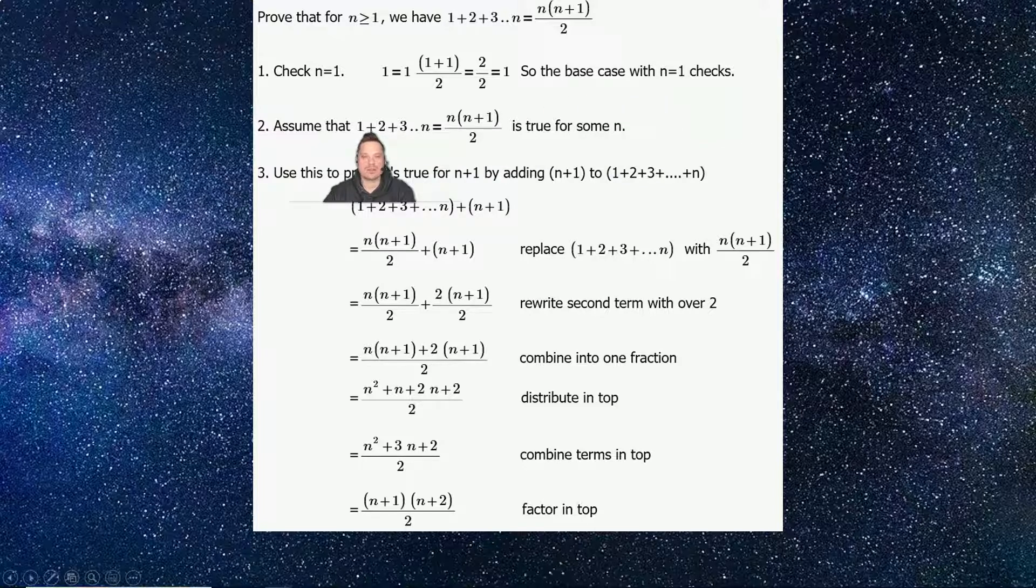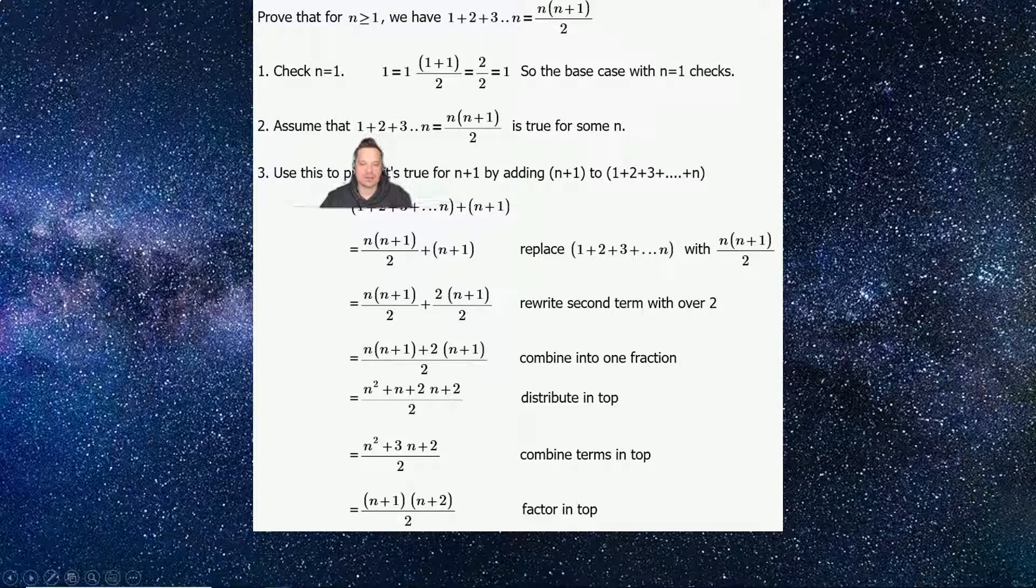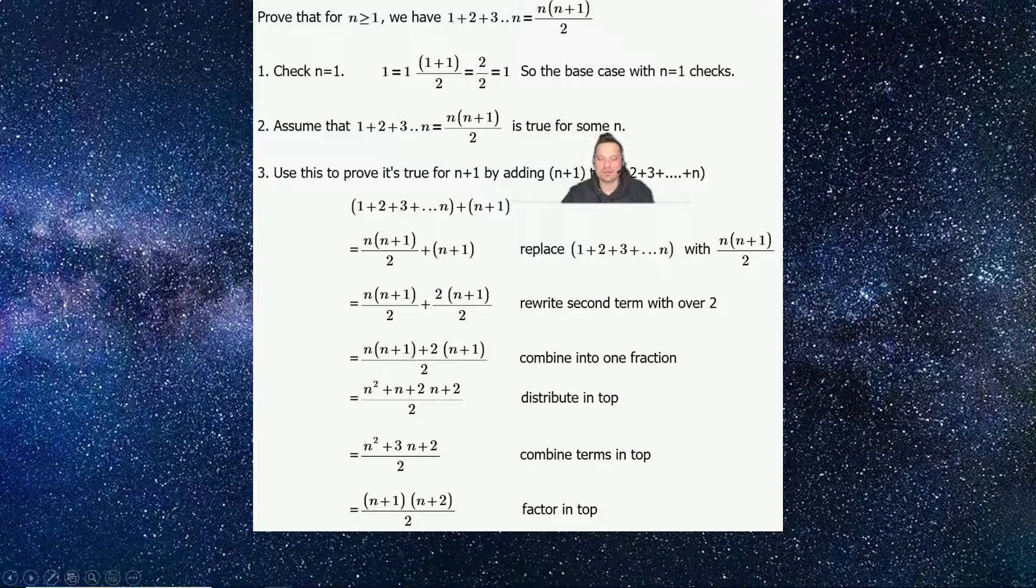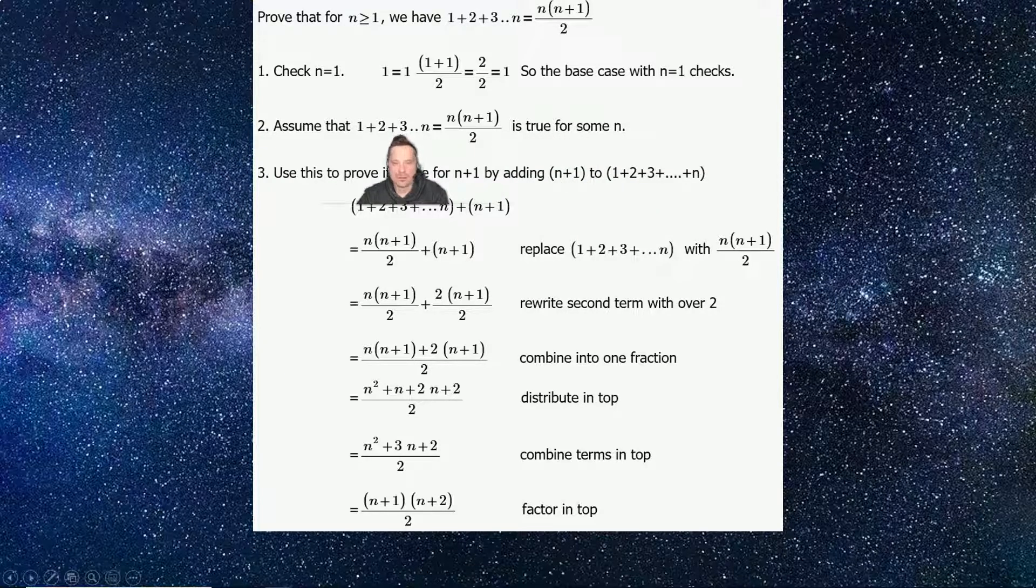So now what we're going to do is basically assume that this same formula, 1 plus 2 plus 3 all the way up to n, will be true for some value of n. We don't know what the value of n is, but we're going to assume that this is true. Why are we assuming that? That's a good question, rather.